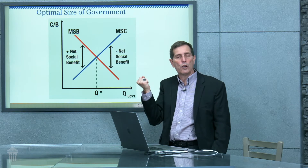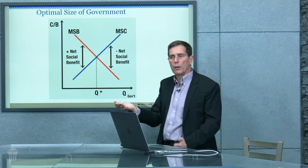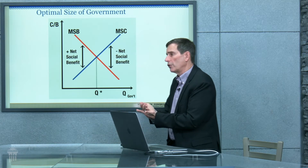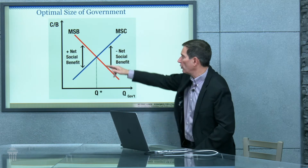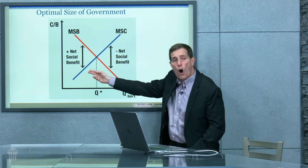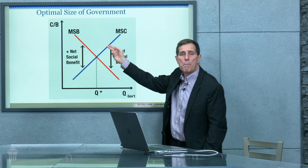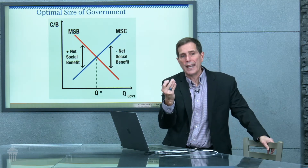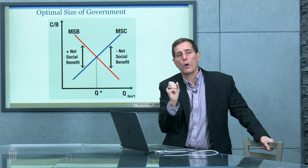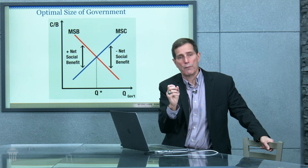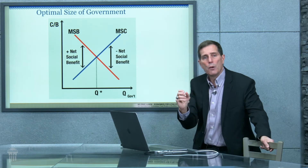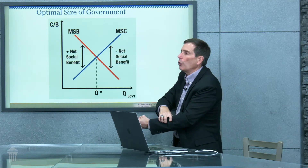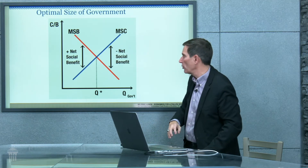Every subsequent use of government applies towards a less urgent need — in the same way that your demand curve for anything else would behave — so the value gets lower and lower as you go on, and the cost goes up and up. The bigger government becomes, the higher the cost, because those resources have an opportunity cost in terms of what they could have been used for in the private sector. We're getting closer to the bones, so to speak.